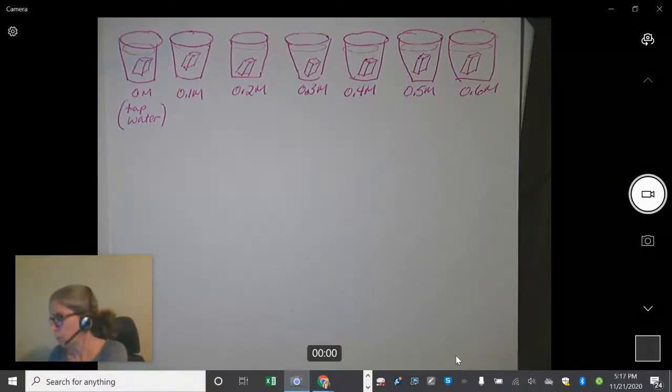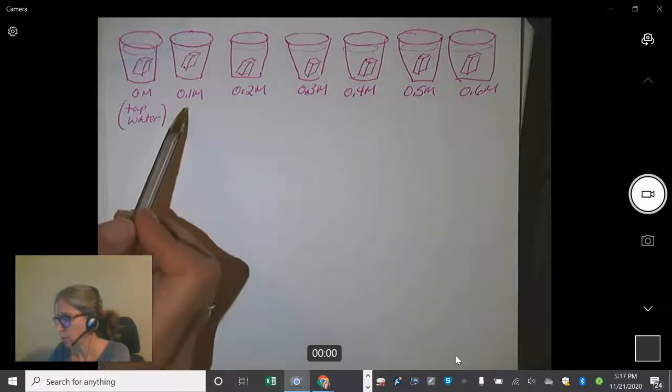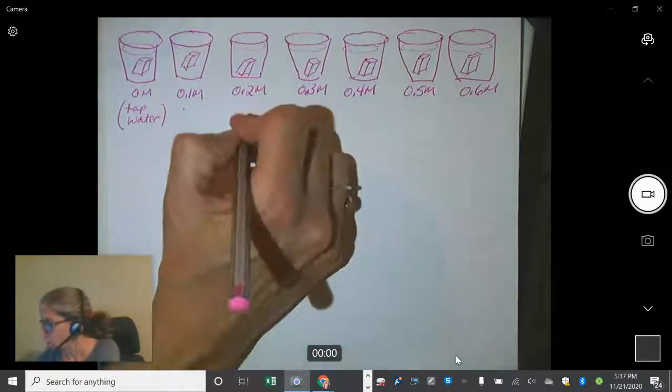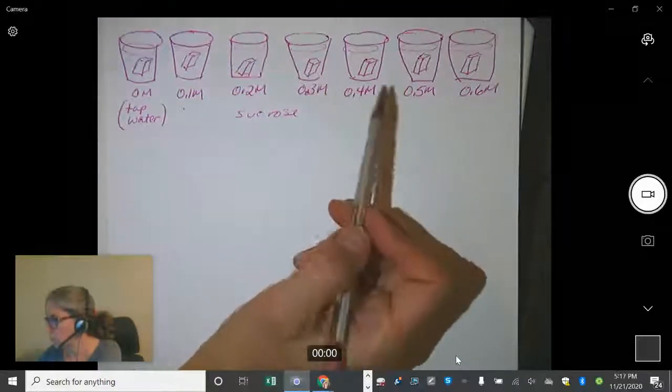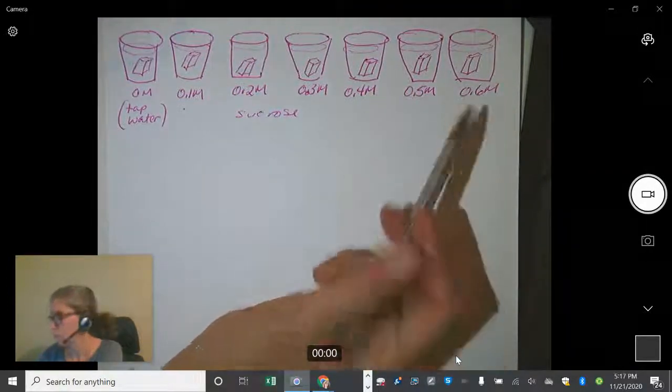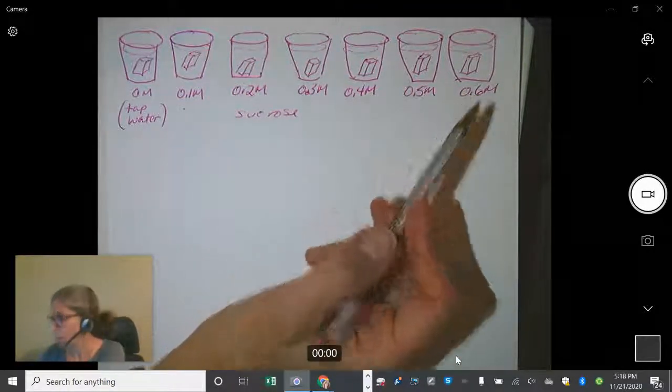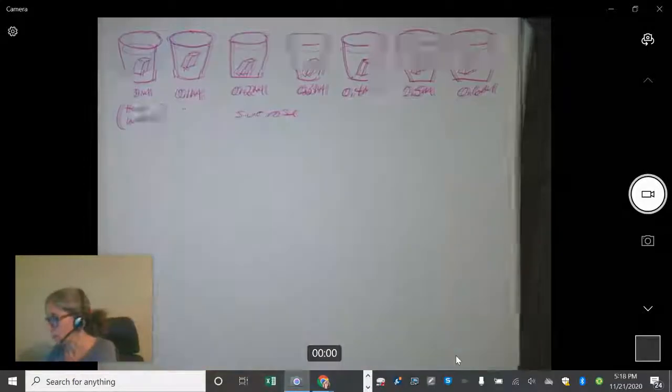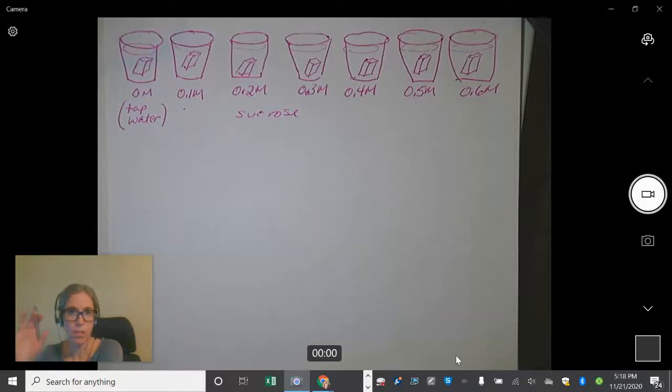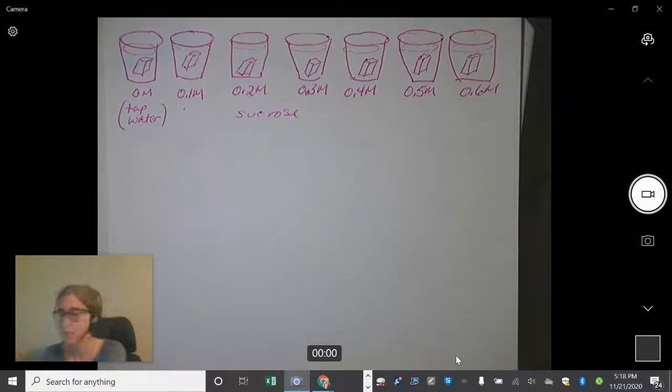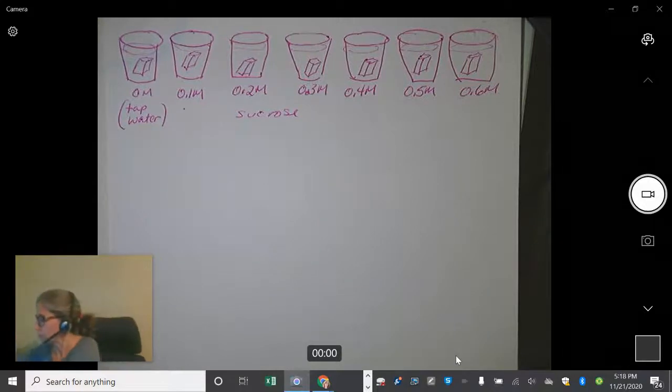And then we poured in just tap water or 0.1 molar sucrose, so some sugar, 0.2 molar, 0.3 molar, 0.4, 0.5, 0.6. So this one had a whole lot of sugar and this one not a whole lot of sugar. So we did the initial mass and then we put them in these beakers and then we got the final mass the next day.